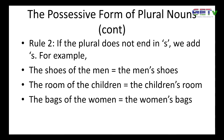Rule number two: if the plural does not end in S, we add apostrophe S, just like we do in the singular. For example, the shoes of the men becomes the men's shoes — men, apostrophe, S — because the plural of man does not take any S. The room of the children — the children's room. Children doesn't take S; child, plural children, no S — so we put apostrophe and then add S. The bags of the women becomes the women's bags.